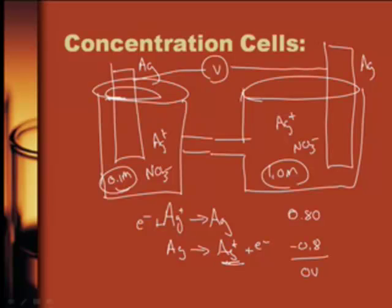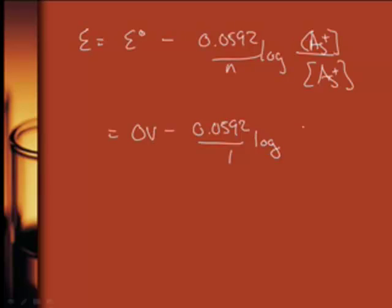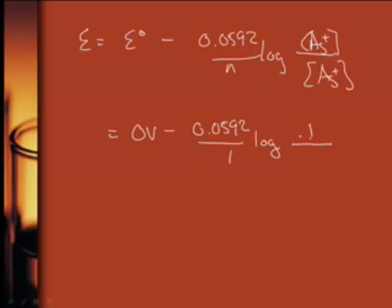So if we say E is equal to E-nut minus 0.0592 over N times the log of Q. Now, what's Q going to be in this case? Well, it's products over reactants. But we need to figure out which one is the product and which one is the reactant. Well, it's just going to be silver over silver, right? Yeah. So let's just write silver over silver. There's no coefficient. So it's just going to be the concentration of silver or the concentration of silver. So this is going to be equal to 0 volts minus 0.0592 over 1 times the log. Now, we've got two choices. There was 1 molar and 0.1 molar. Which way is it going to be? It's actually better to think about it for a moment. Le Chatelier's principle says if you want to have positive voltage – we talked about this earlier – What side do you want to have the higher concentration? The product side. Our reactant side. It might be the reactant side. So this needs to be 1 molar, and that makes this the 0.1 molar.